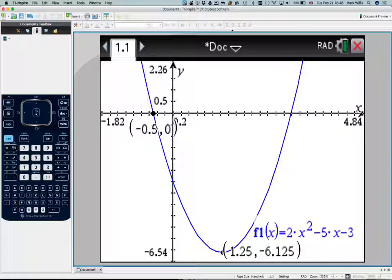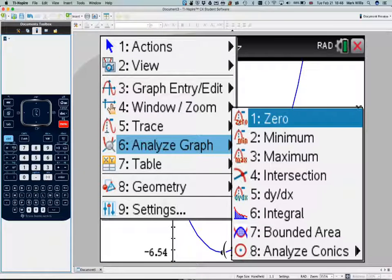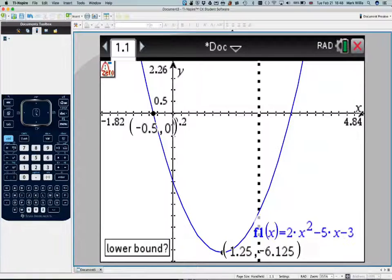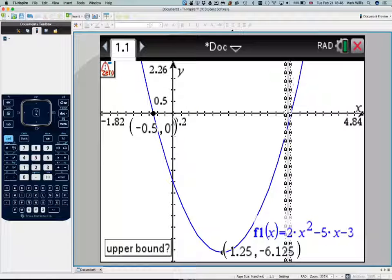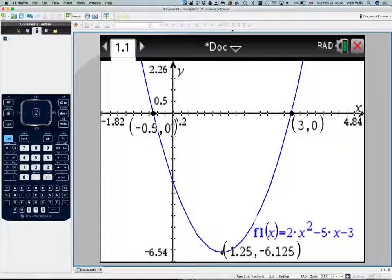I'm just going to move the label a little bit so we can see it. Okay, and then you have to repeat that. So it's menu, number 6, analyze the graph, go to zeros, go to the left, go to the right.